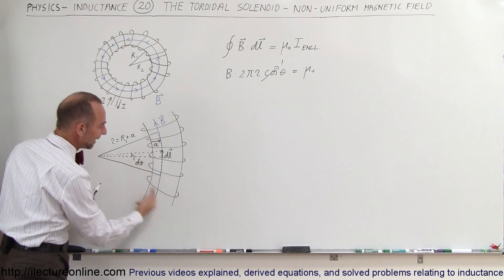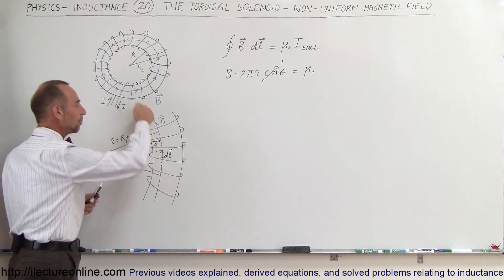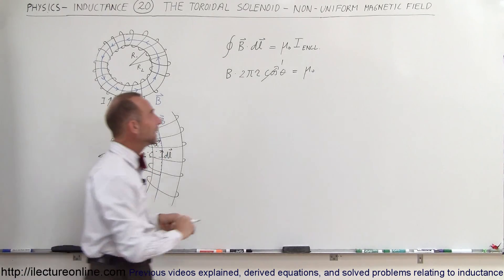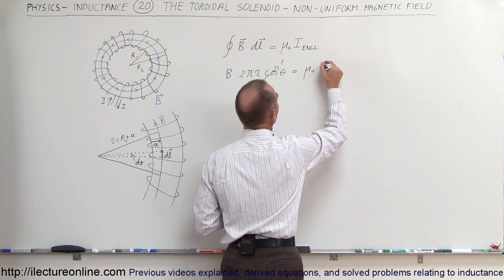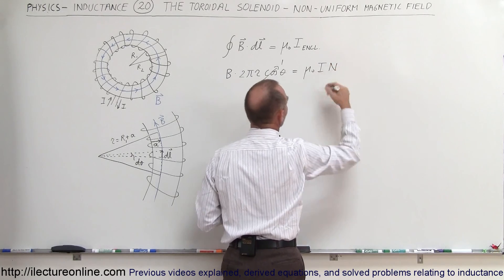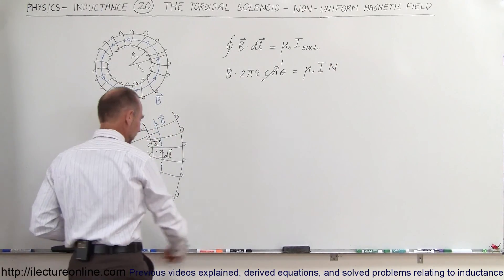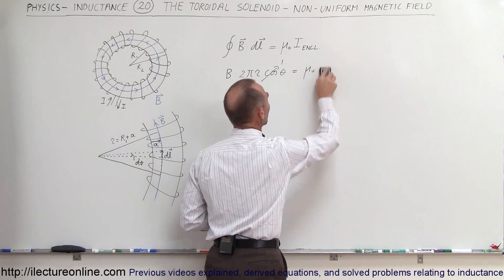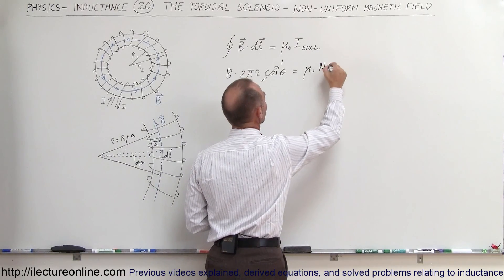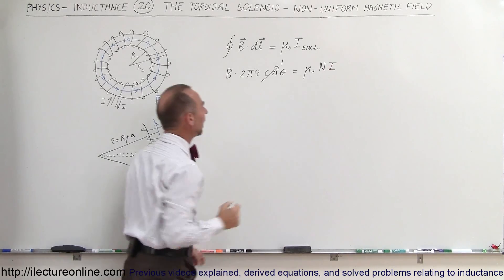And the current enclosed is going to be the current inside the loops times the number of loops. The total number of loops would be n so it would be I times n or n times I. I think we typically write it n times I so let's write like that. That's a more uniform way of writing it so times n times the current in each loop I.